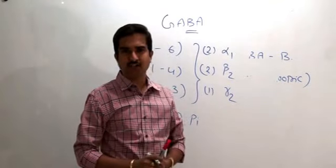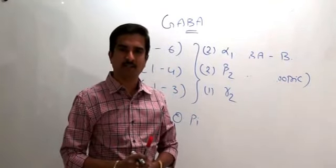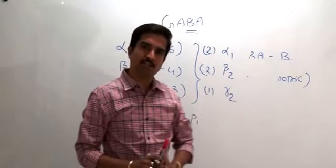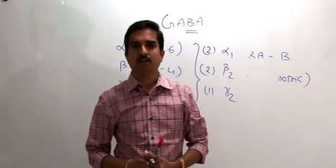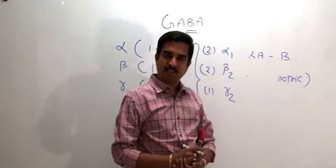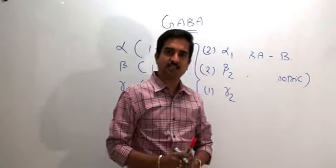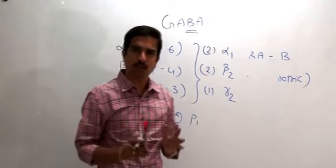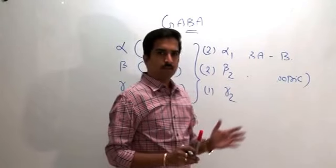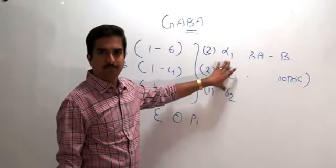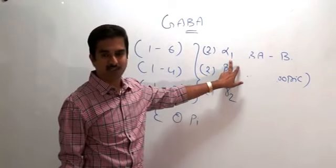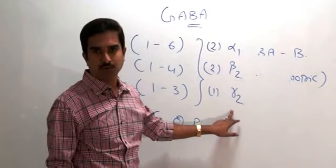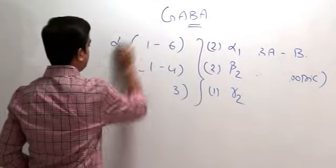In other locations the subunit composition differs. For example, α1 receptors are predominantly present in the brain, while α6 receptors are present in the cerebellum. The key point to remember is that in the brain, the GABA-A receptor is made up of two α1 subunits, two β2 subunits, and one γ2 subunit.